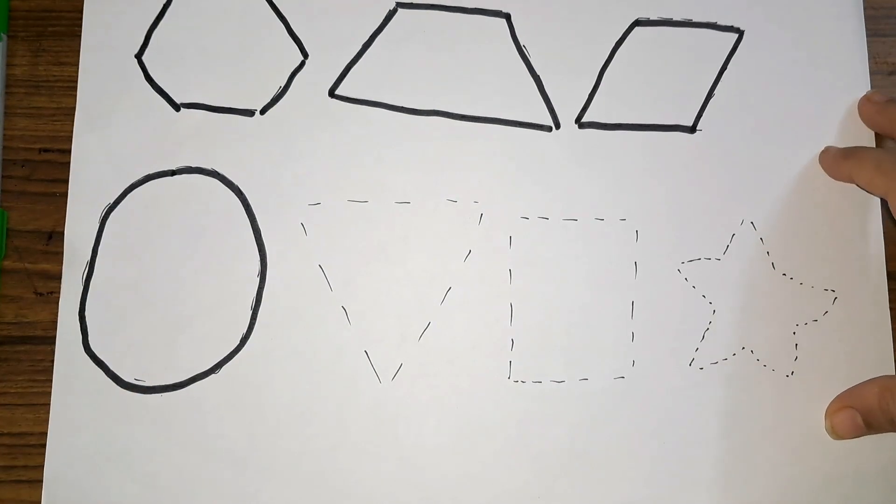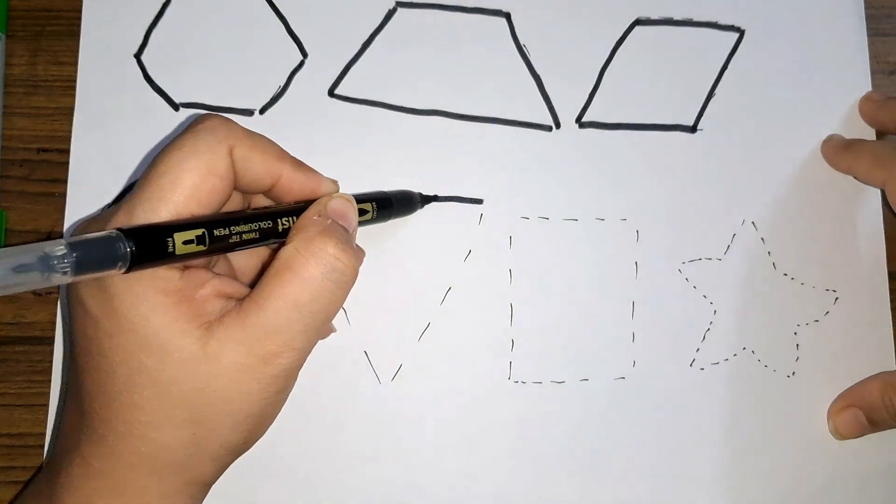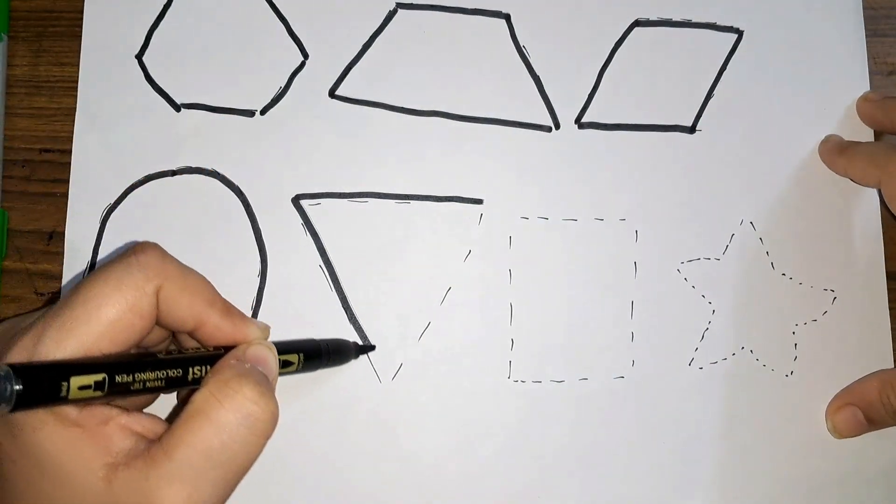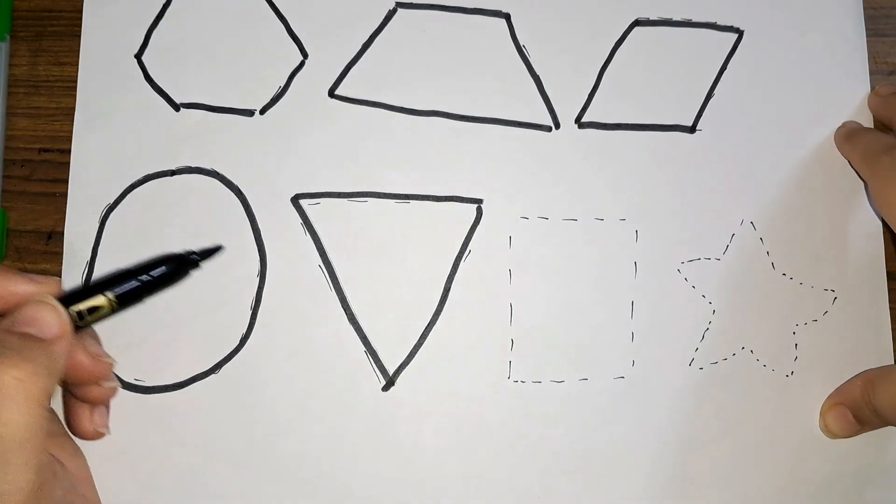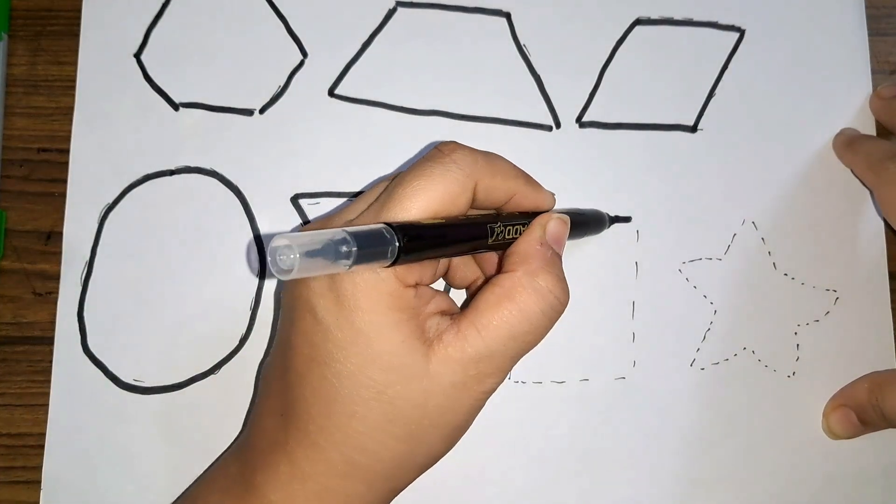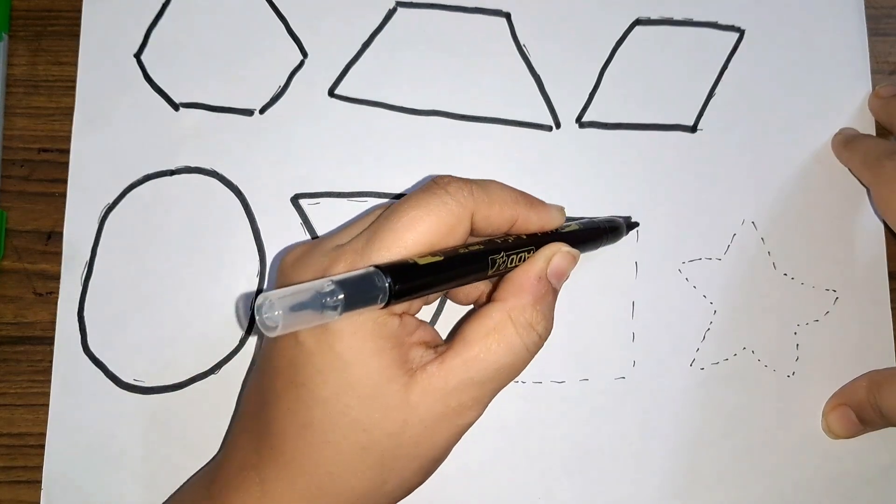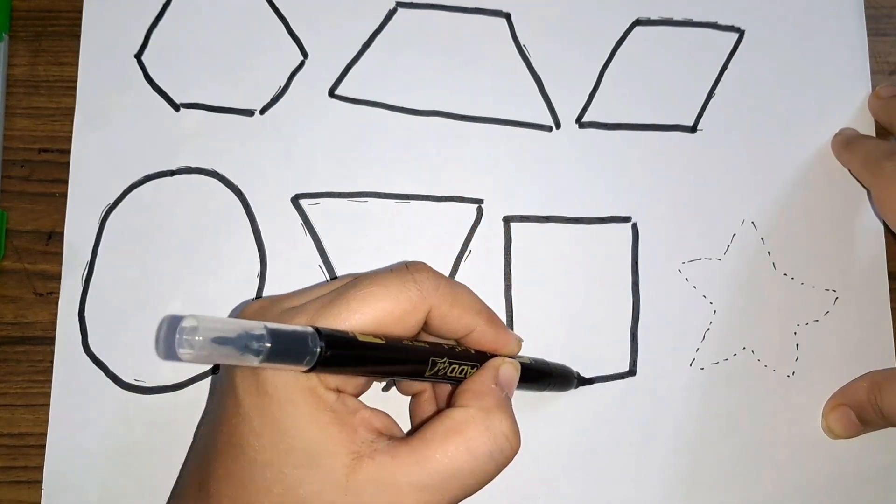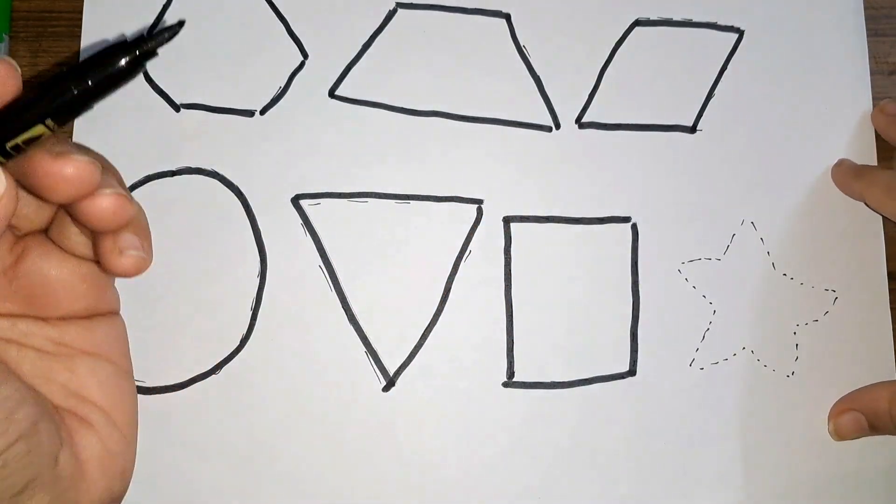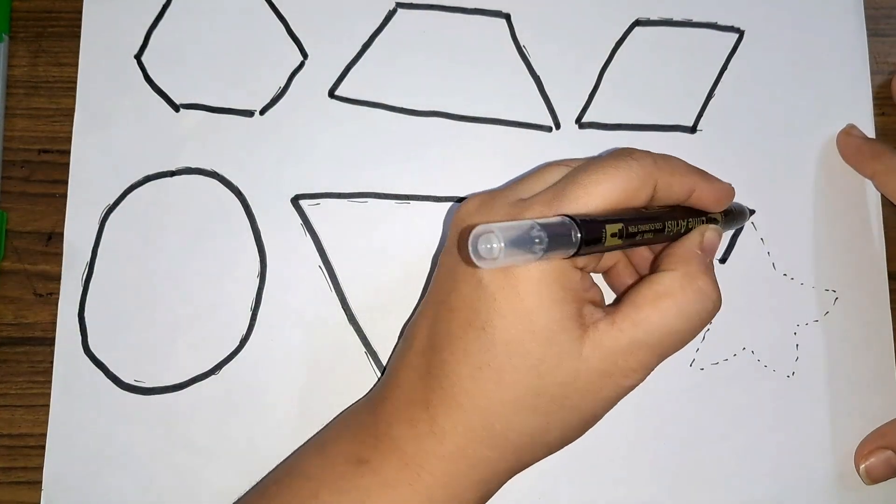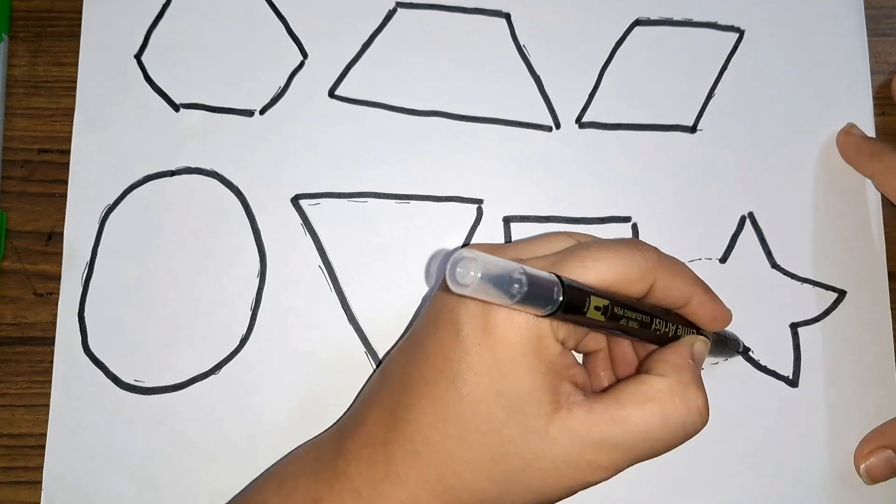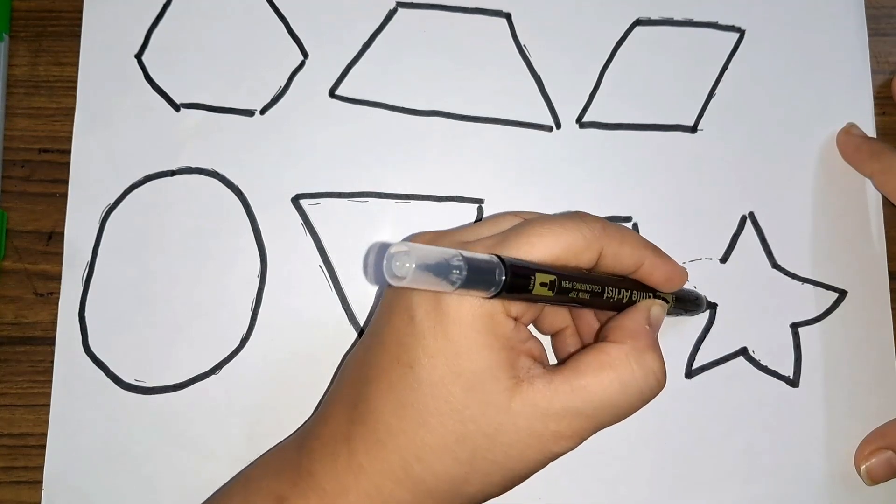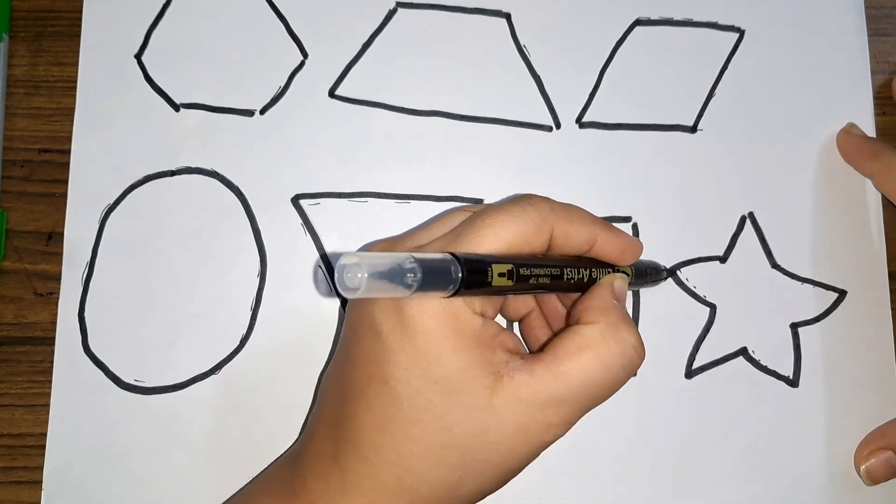This is a circle. Can you tell me this shape? Which shape is this? This is a triangle. Can you tell me this shape? Yes, it's a square. Now can you tell me this shape? This is a, yes, it's a star.